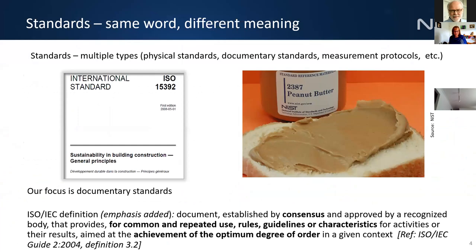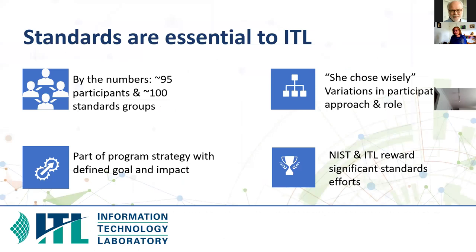I like to start with the definition of a standard that NIST embraces. It's a document — and we're talking about documentary standards here, although in the IT spec space we're seeing those move into different types of artifacts. It's established by consensus, leads to common repeated use in rules and guidelines about the characteristics of whatever it is, and is aimed at the achievement of the optimum degree of order — we like to read that as: it does what it's supposed to do. Standards are very essential to ITL.